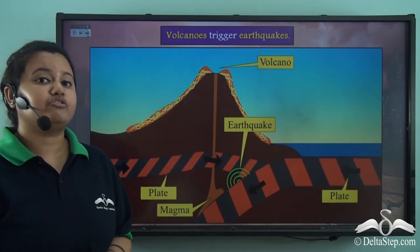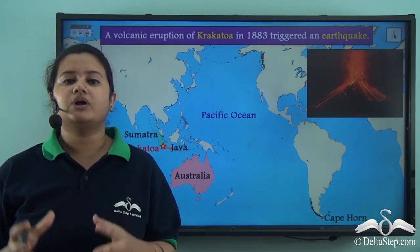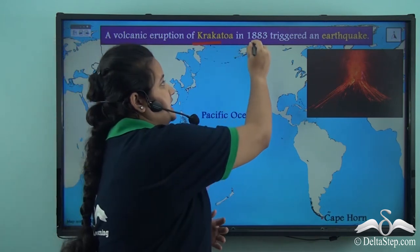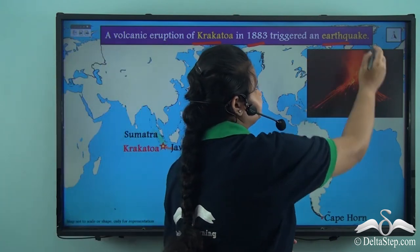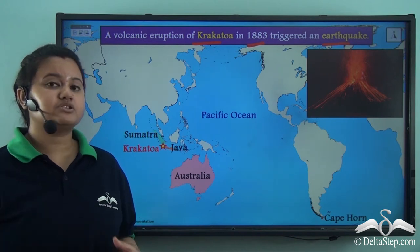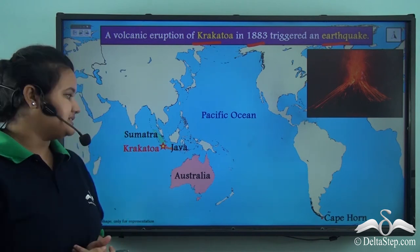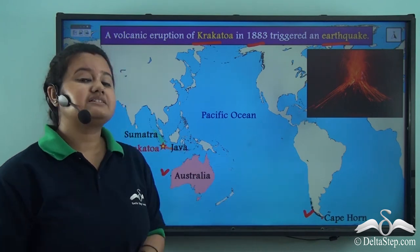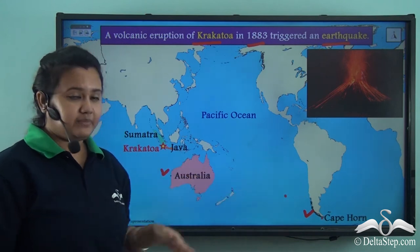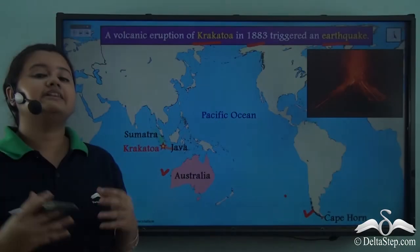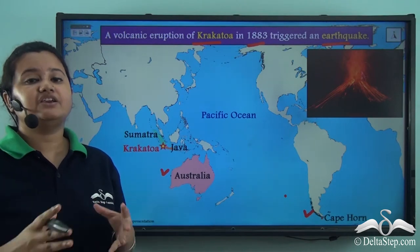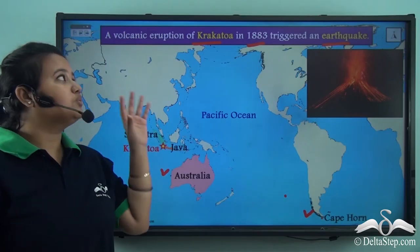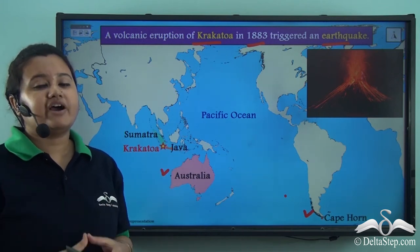Volcanism is also an important cause of an earthquake. A massive volcanic eruption of Krakatoa, situated in Indonesia in 1883, triggered a massive earthquake. The earthquake was so intense that its tremors were felt in faraway places like Australia and Cape Horn in South America. This earthquake also produced large sea waves or tsunami, which damaged the countries of Sumatra and Java. Thus, the volcanic eruption of Krakatoa caused a fatal earthquake.